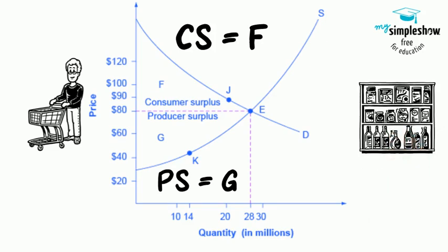point K on the supply curve shows that at a price of $45, firms would have been willing to supply a quantity of 14 million.